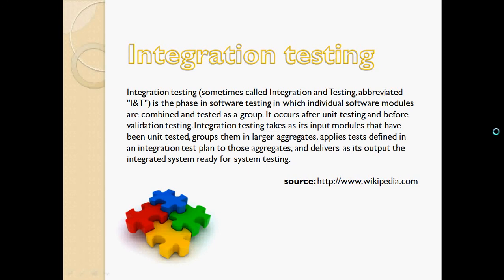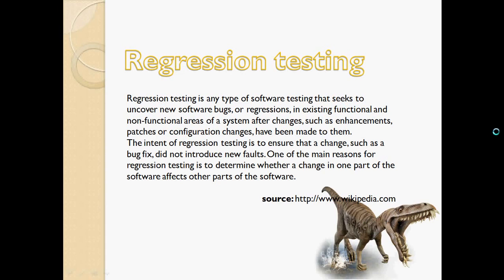Regression testing is a little bit different from the flow we've been going through, but it's still important. Regression testing is basically when you have done all your tests and found bugs. The developer is going to fix those bugs and redeploy the system for you to test. You can't assume that things that previously worked are still going to work, because fixing one bug may cause problems in other areas. So every time the developer makes a change, you have to run all your tests again to make sure the fix didn't introduce new problems.